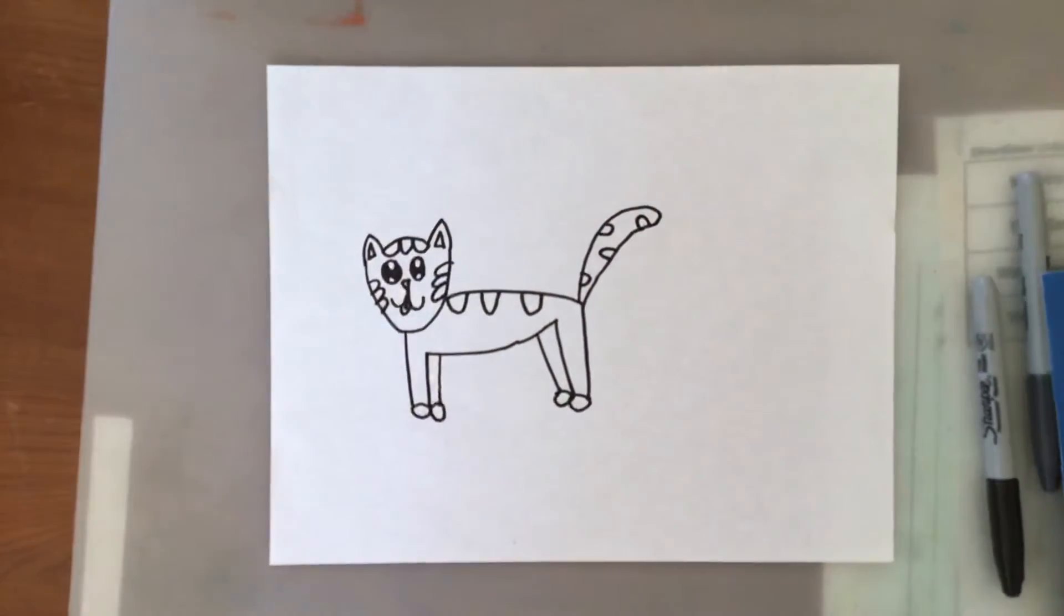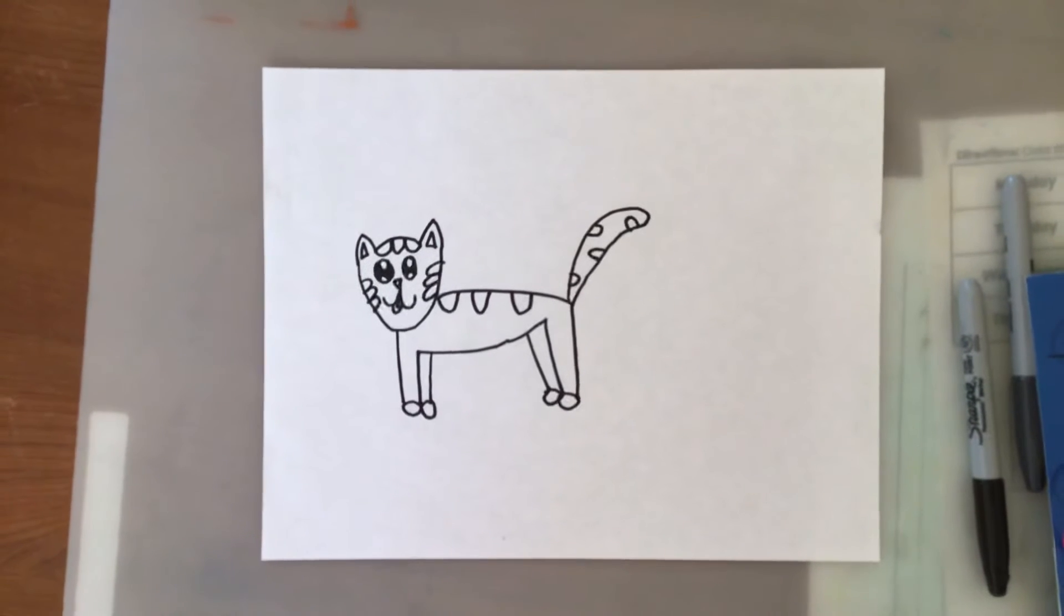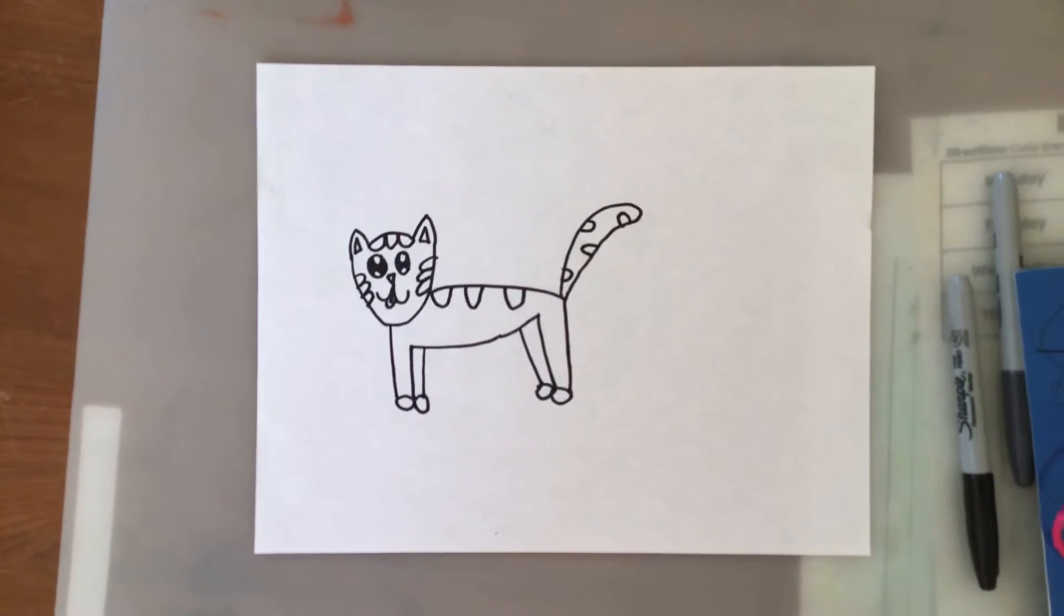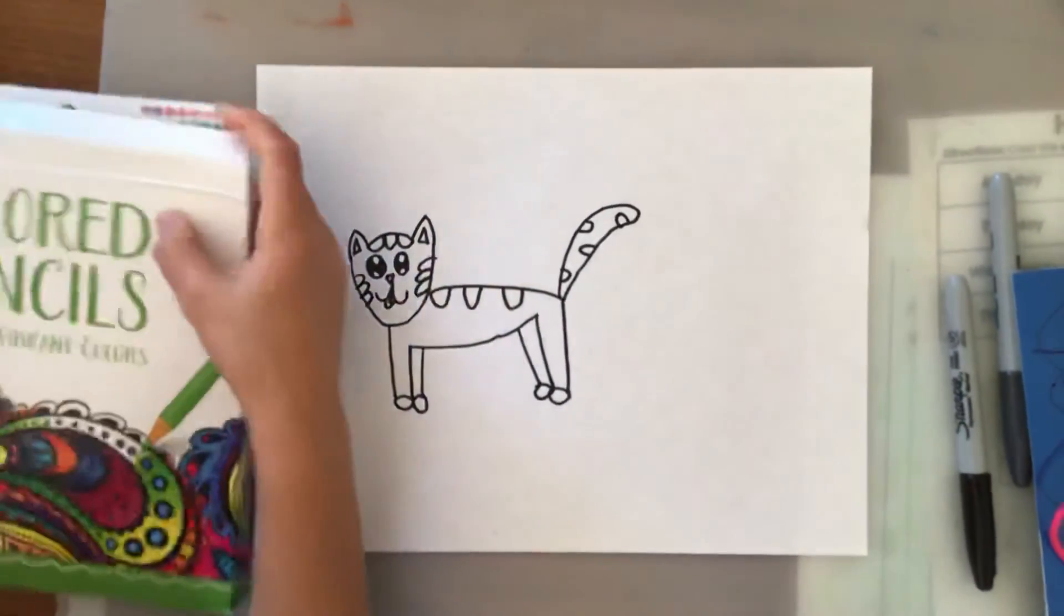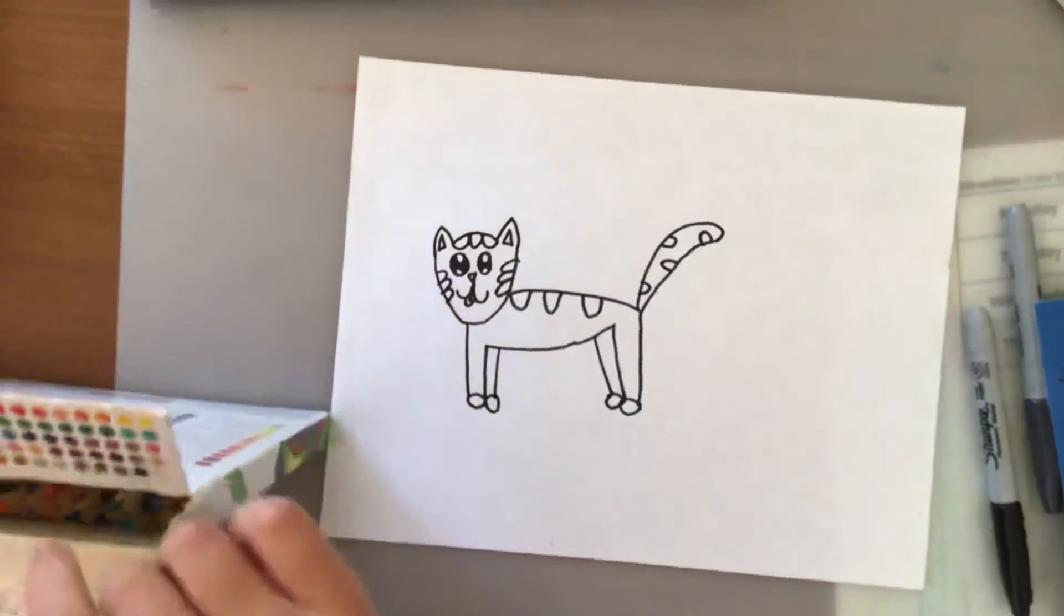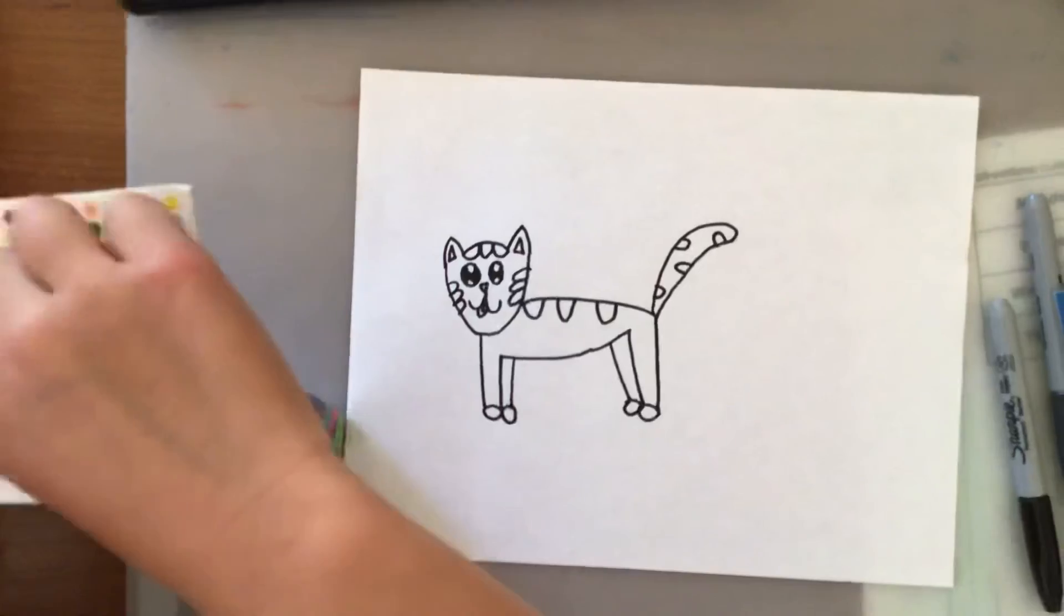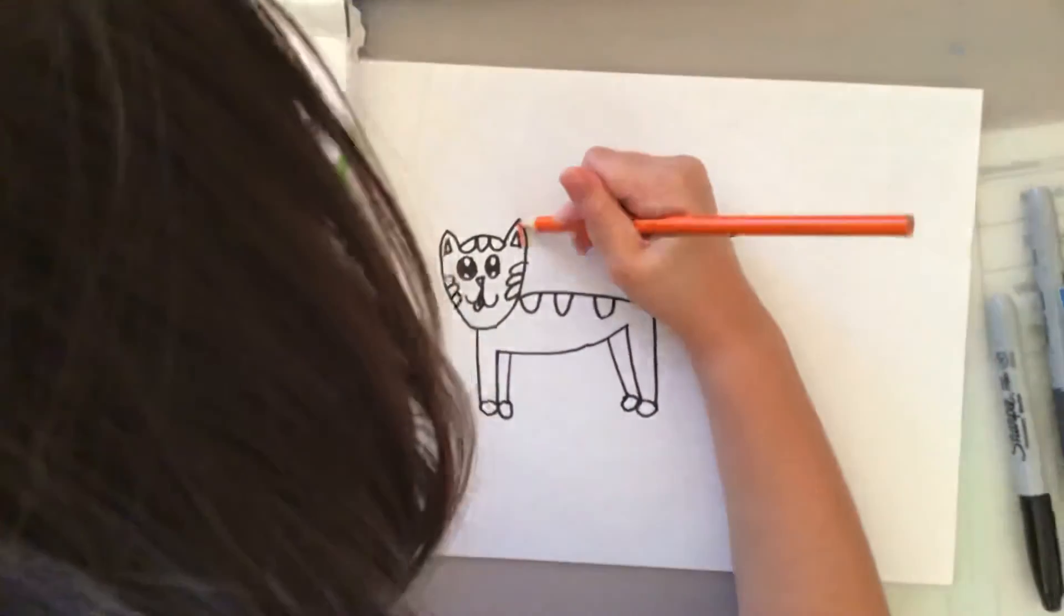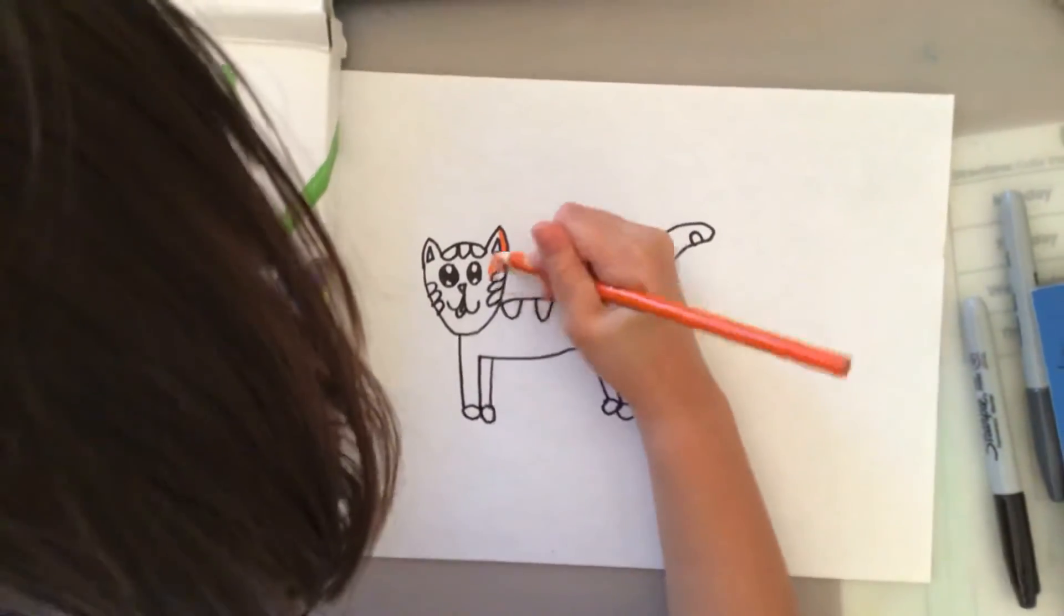I'll go get my crayons or something. There we got our coloring things. We're first gonna grab our color that's gonna fill up the whole cat except our stripes. I'm gonna do an orange cat. You guys can pause the video or take time to color your cat.